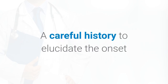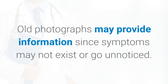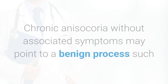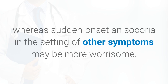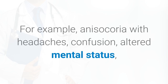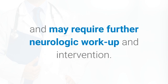A careful history to elucidate the onset and chronicity of anisocoria may be useful for determining its etiology. Old photographs may provide information since symptoms may not exist or go unnoticed. Chronic anisocoria without associated symptoms may point to a benign process such as physiologic anisocoria, whereas sudden-onset anisocoria with other symptoms may be more worrisome. For example, anisocoria with headaches, confusion, altered mental status, and other focal neurologic deficits suggest an underlying mass effect and may require further neurologic workup.